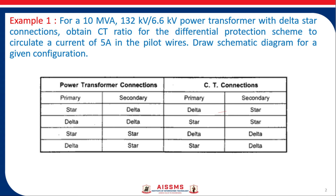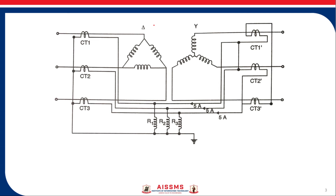Now let us see the diagram for this type of protection scheme. This diagram shows a delta-star power transformer. CTs on the delta side of the power transformer are connected in star, and CTs on the star side of that power transformer are also connected in star. According to the given numerical, 5 amperes of current flows through the pilot wires.